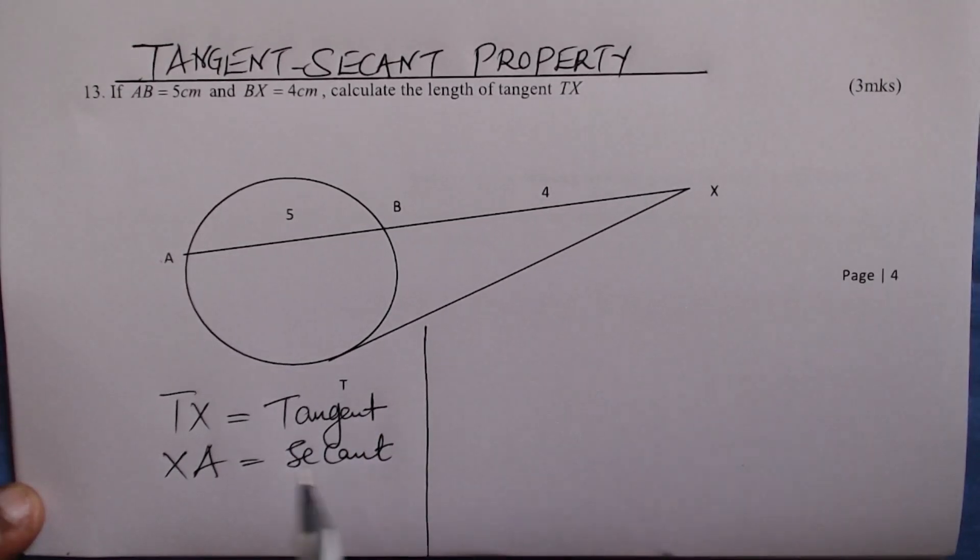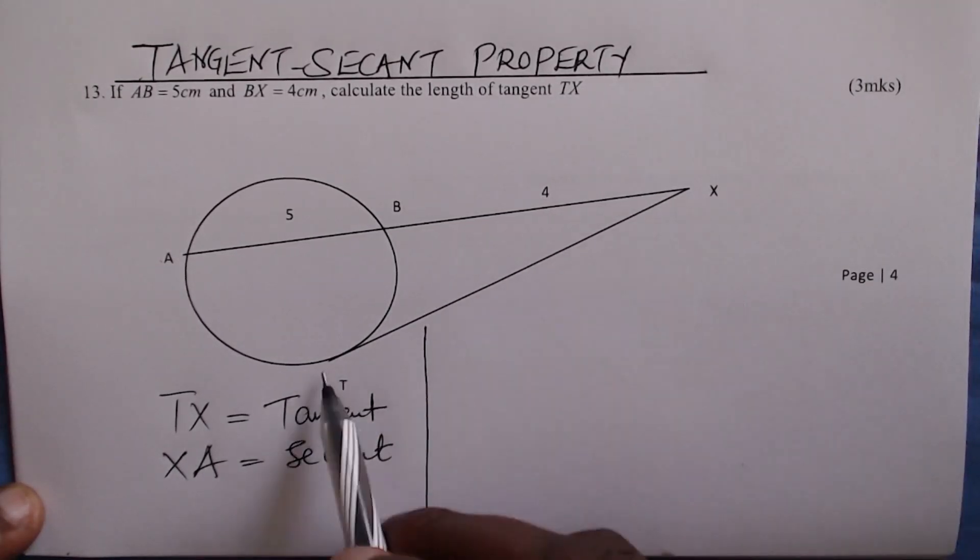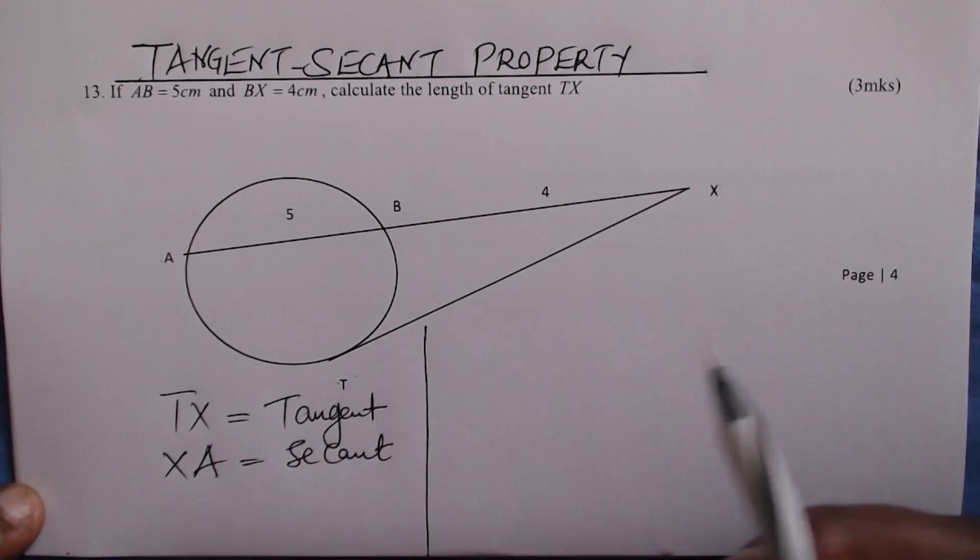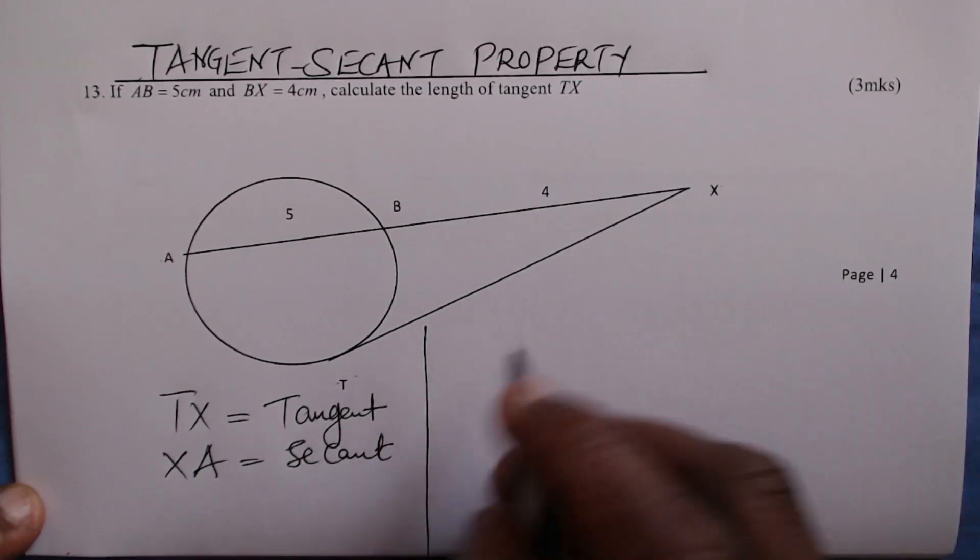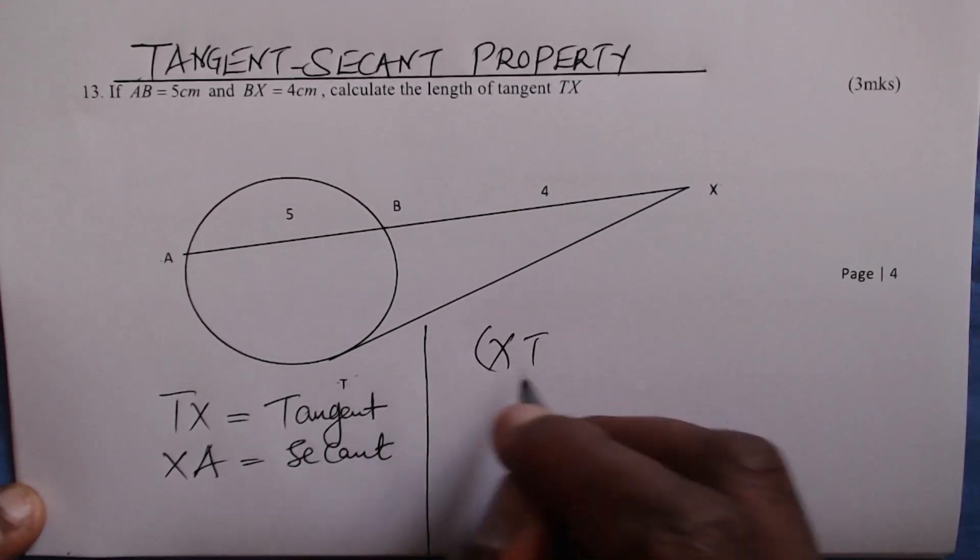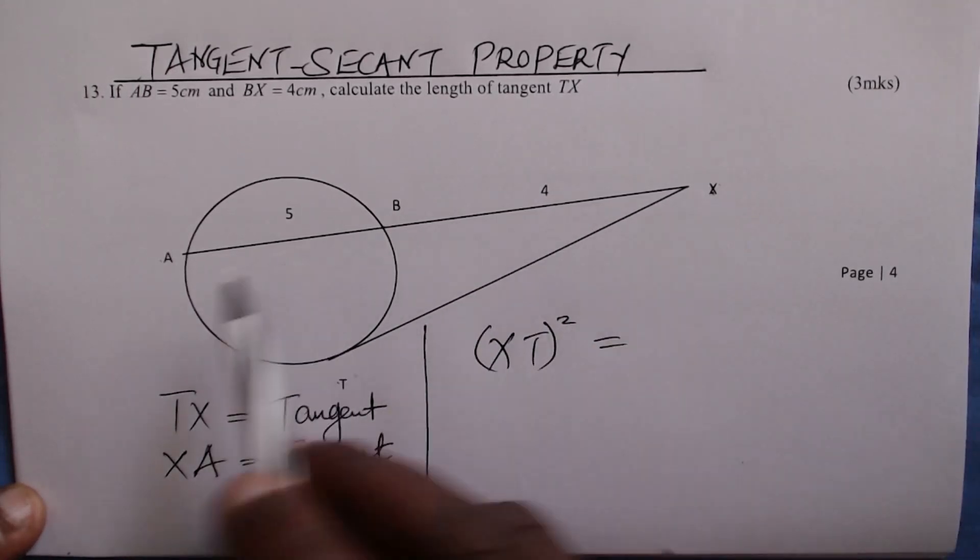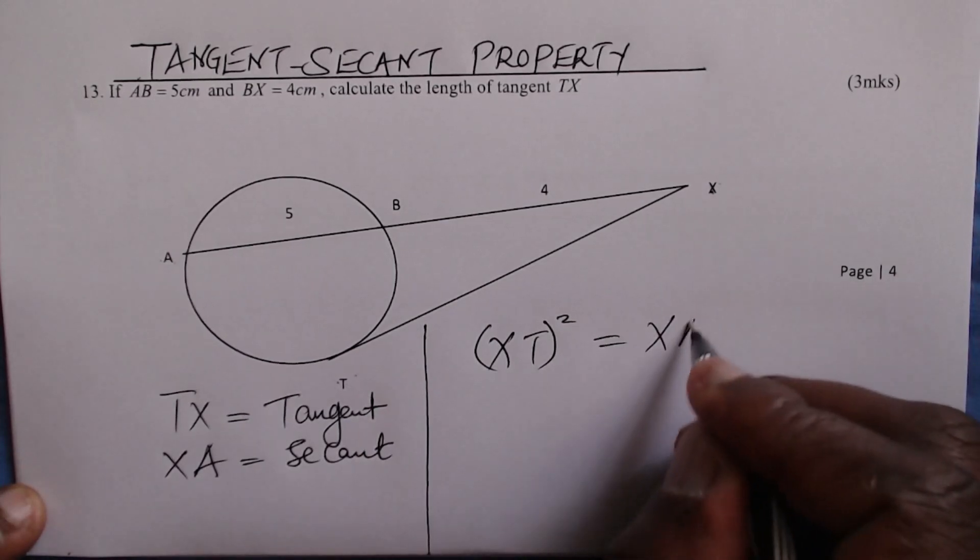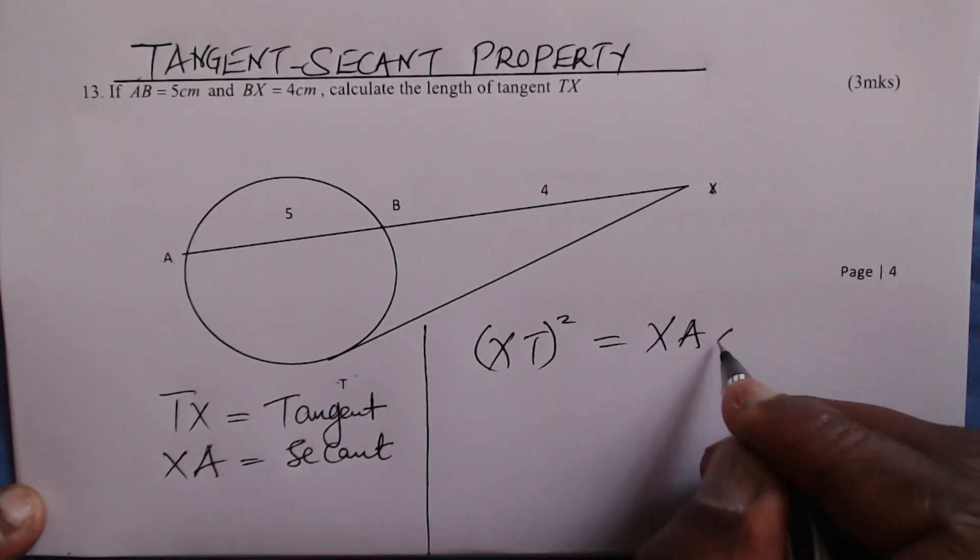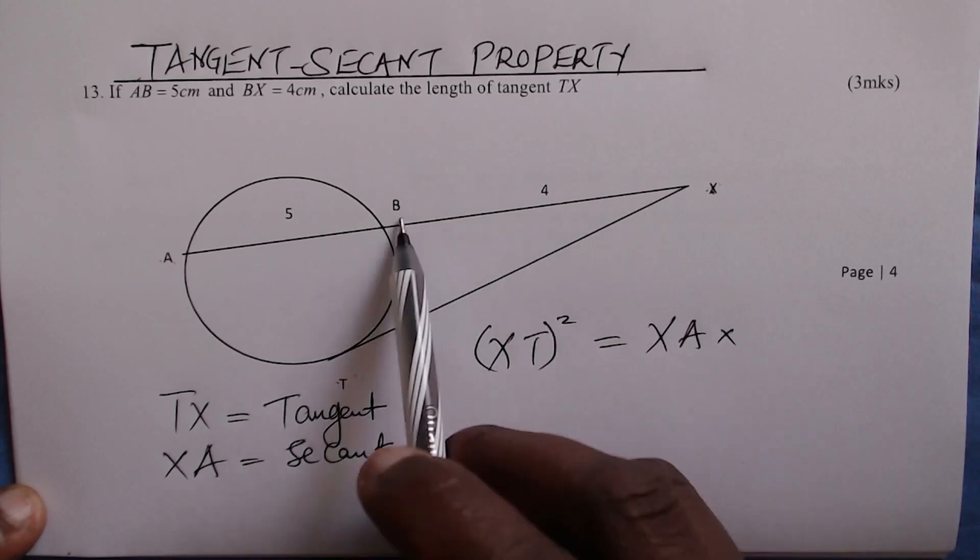Now, there is a property that connects the tangent and the secant of a circle. It goes like this: XT squared equals XA multiplied by XB.